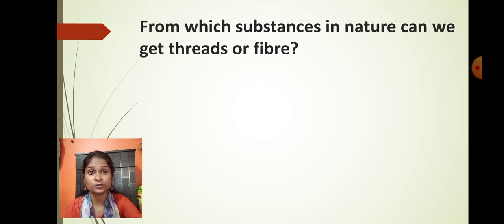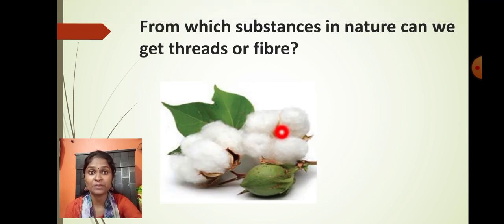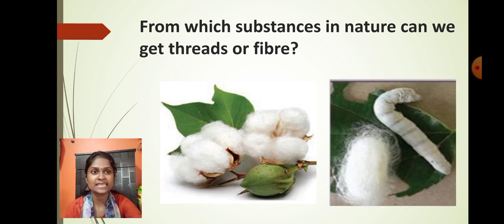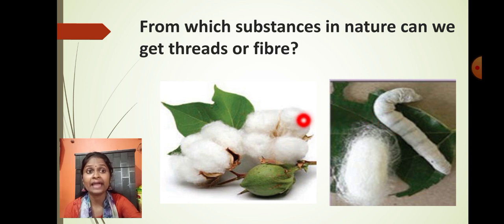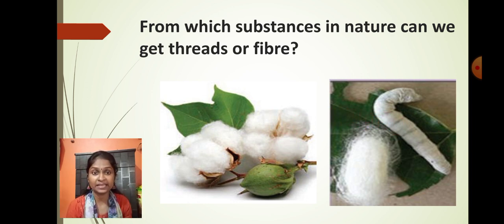We get thread and fiber from cotton. By using cotton, we can get cotton cloth. And at the same time, you must have seen the silkworm — silkworm is necessary for getting silk cloth. So silkworm and cotton are the natural materials which give thread in large quantity.